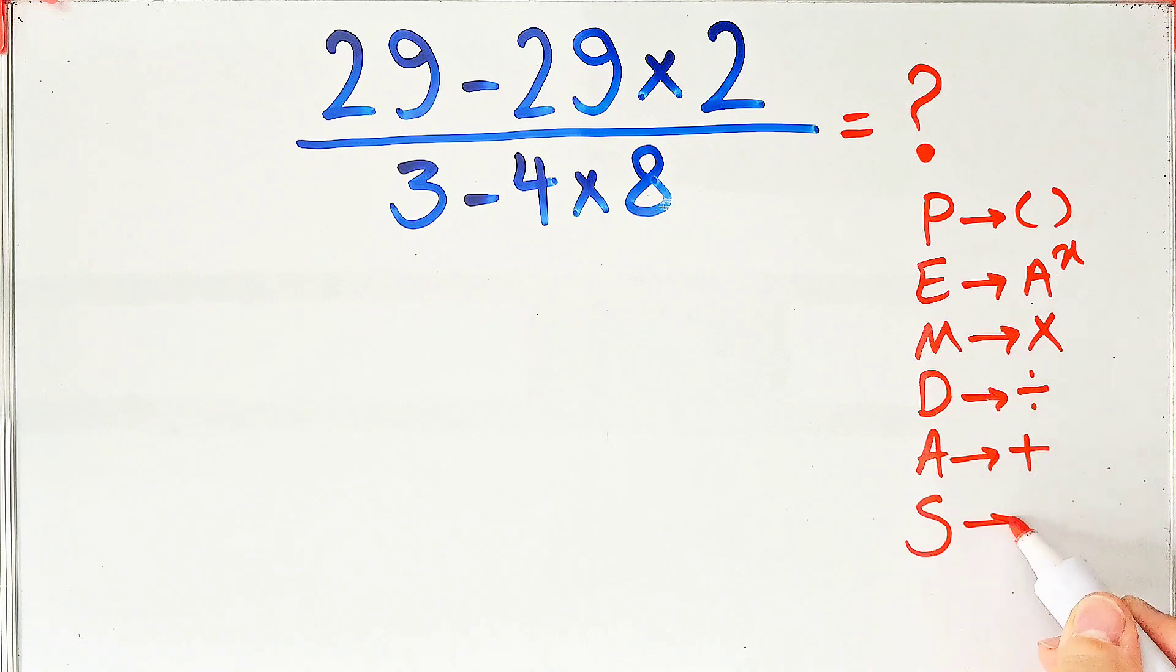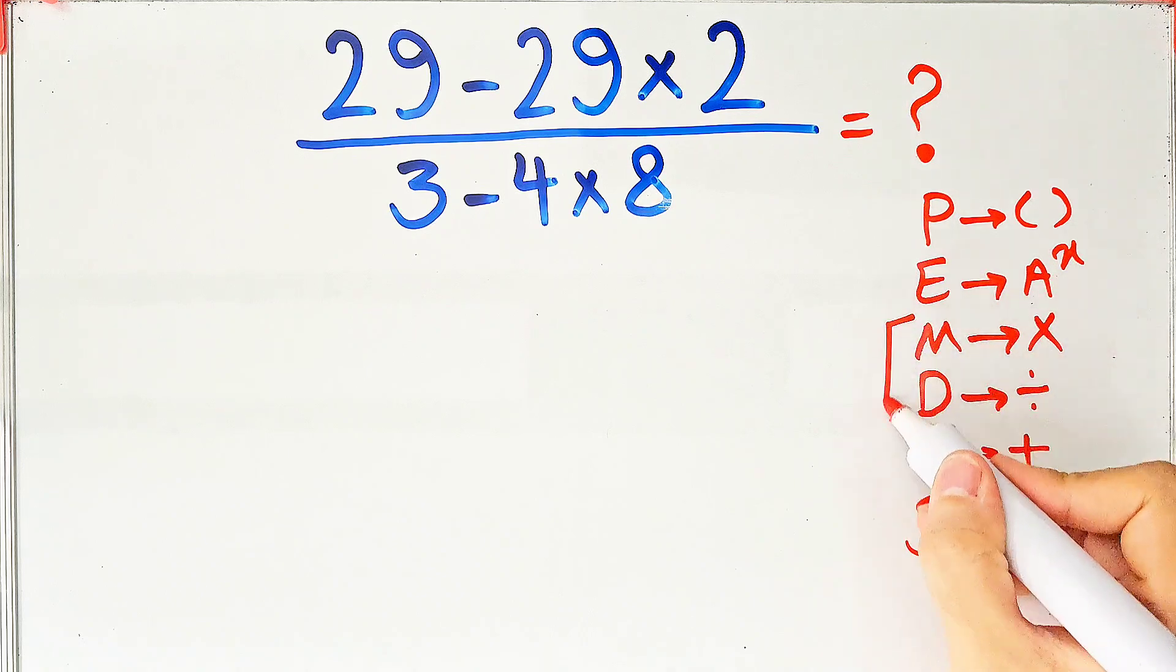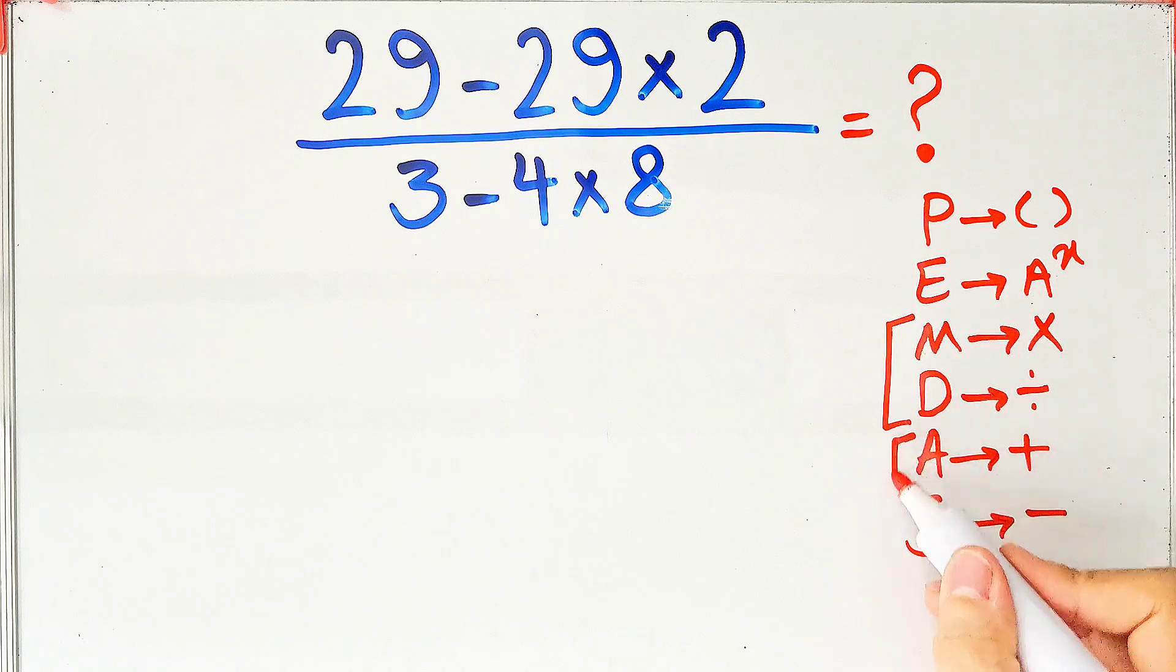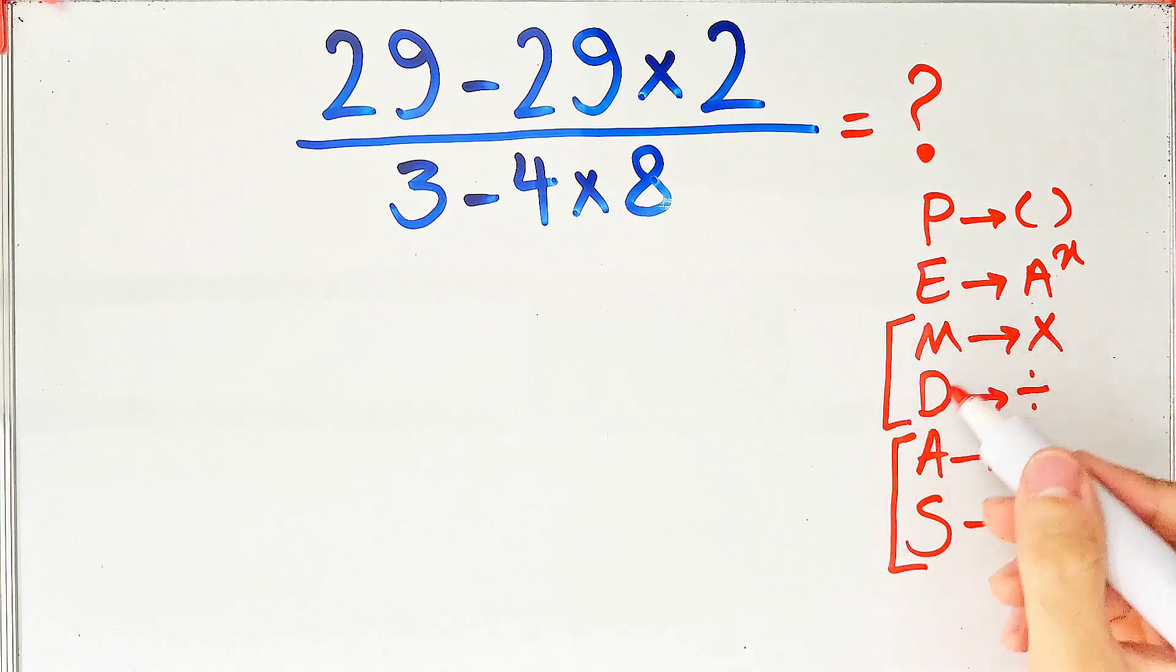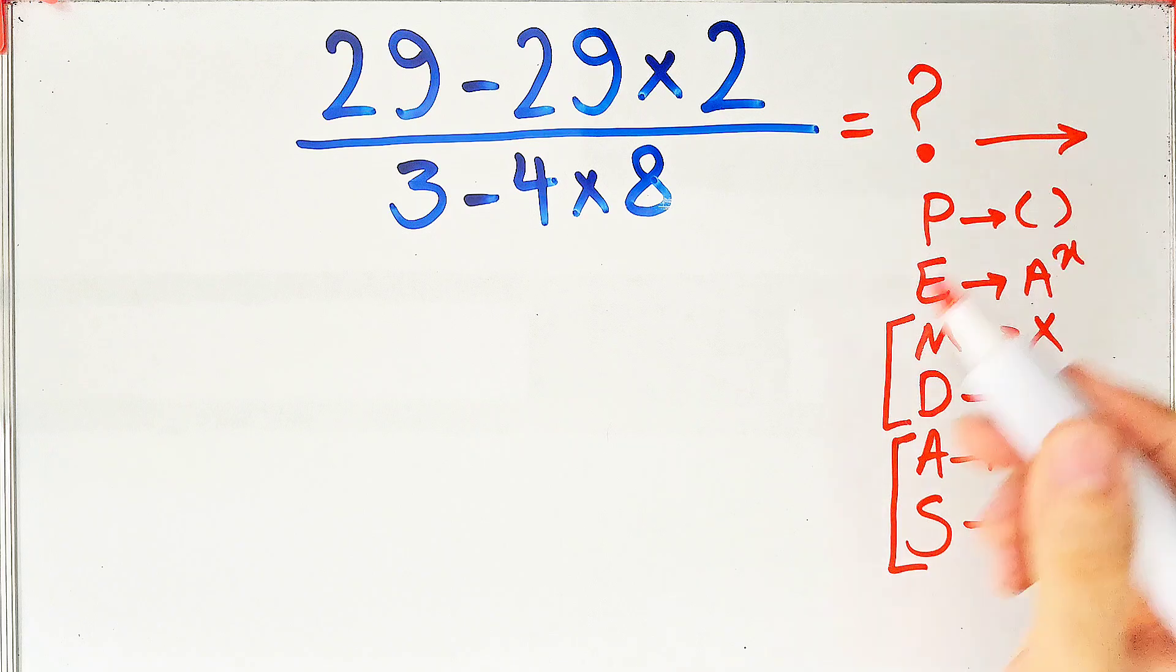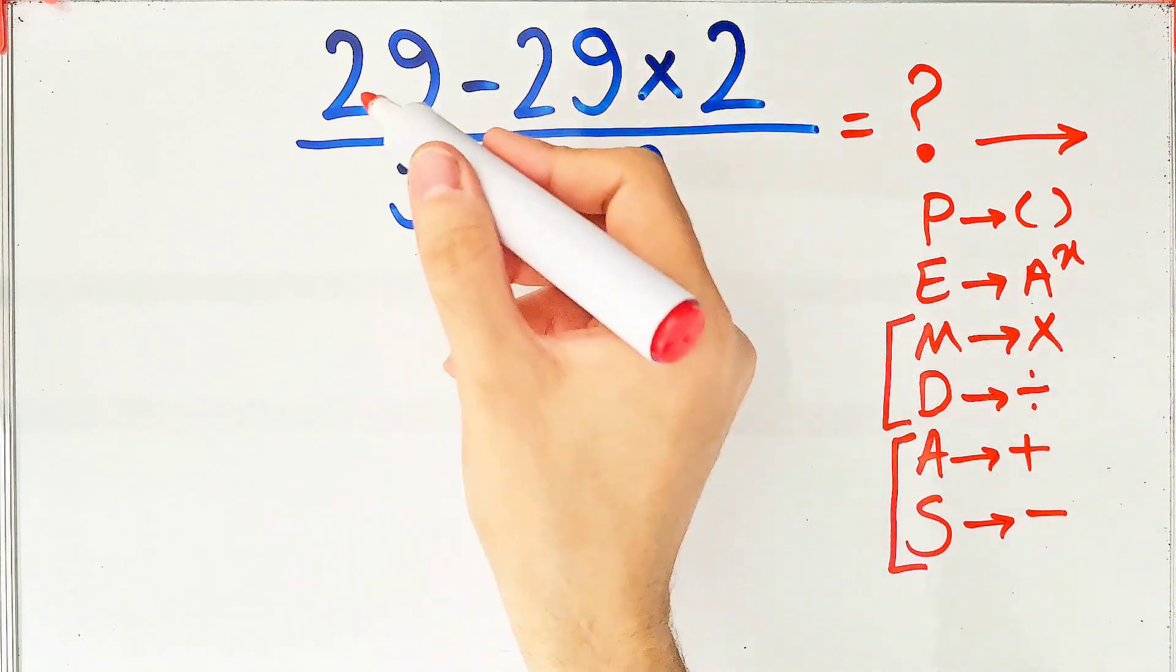Multiplication and division have the same level of priority. Also, addition and subtraction have the same level of priority. When we have both in an expression, we start from the left and simplify the question.